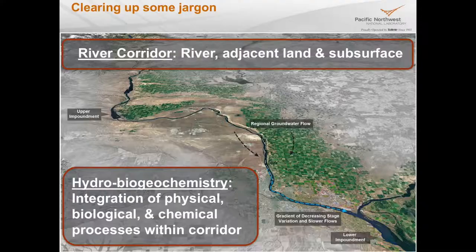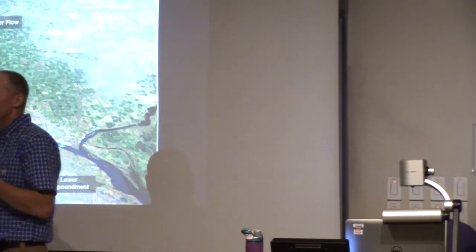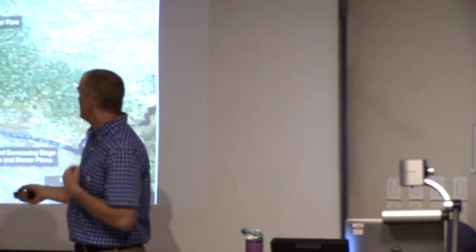A river corridor, as shown in this satellite image of the Columbia River in eastern Washington, includes the river itself plus the surrounding land surface, subsurface sediments, and vegetation — the whole collective system together. Hydrobiogeogeochemistry is an umbrella term linking chemical, physical, and biological processes within the river corridor in a broader watershed context. The term is led by 'hydro' because a lot of the interesting biology and chemistry follows from the hydrology — you can't really do biology or chemistry without water.